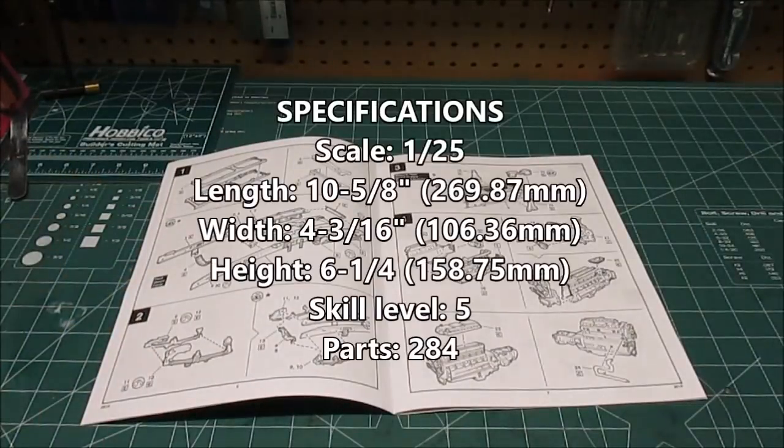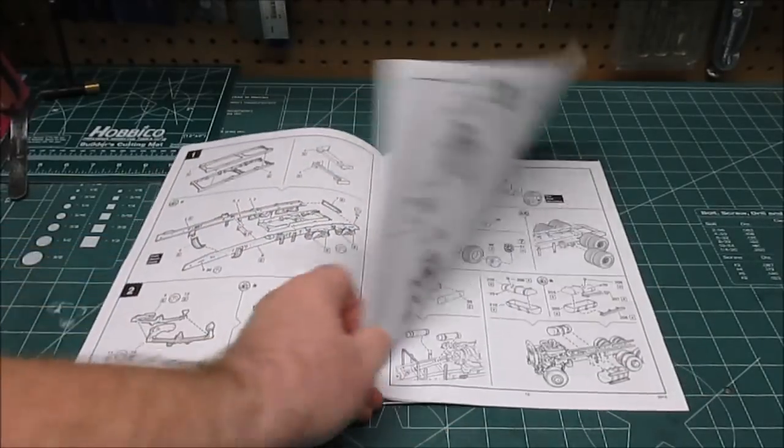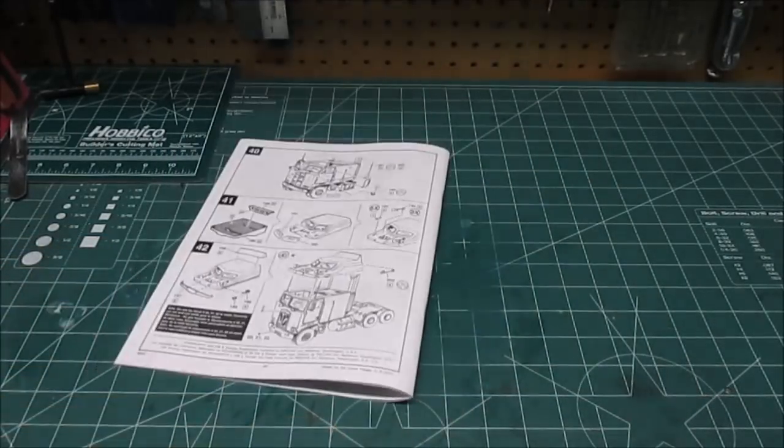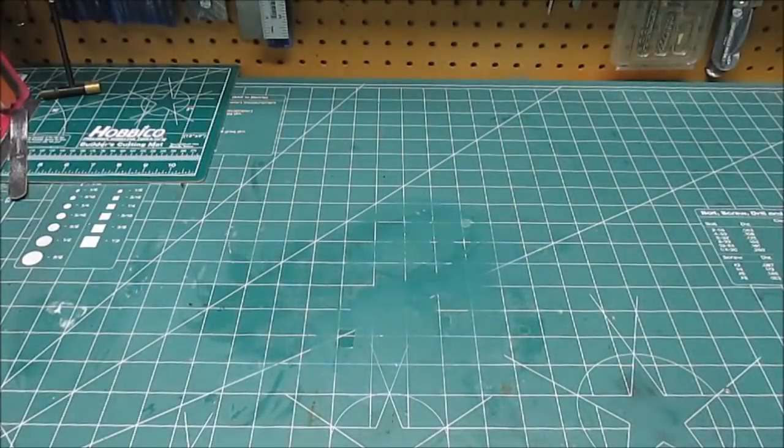First up, it's going to be that manual, that standard Revell Monogram manual we all come to love. This one is a big one. It's more like a book, more like a magazine. It's got 24 pages and 42 steps to carry you all the way through because you're going to build this thing up like it's a real truck.